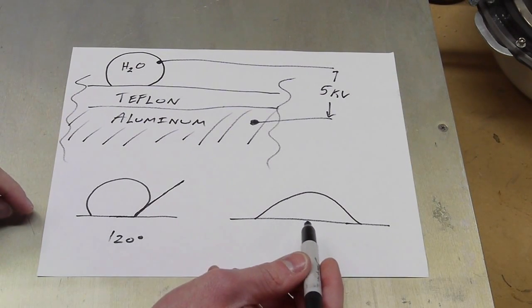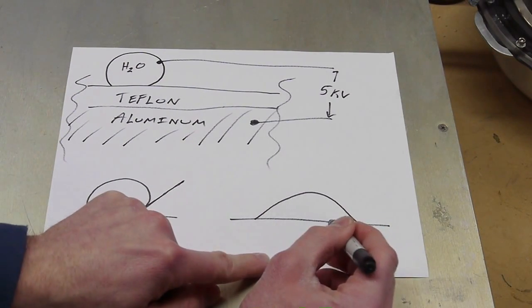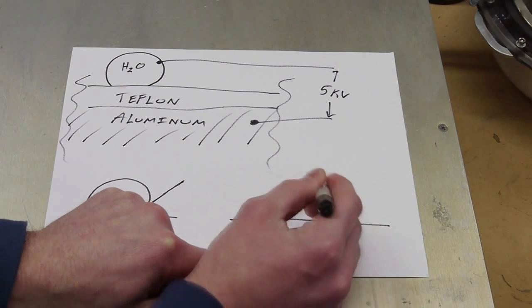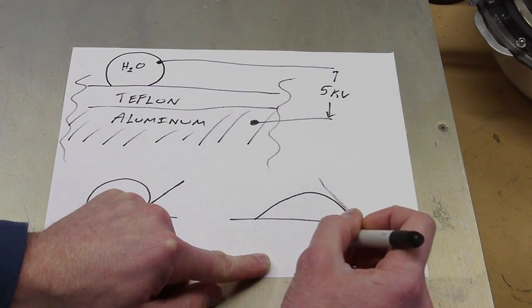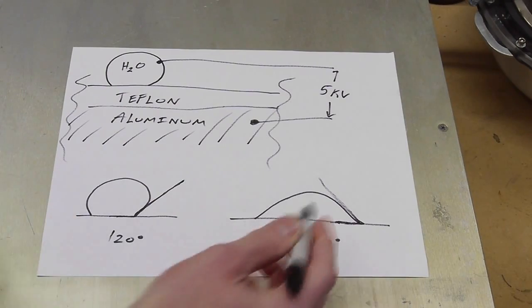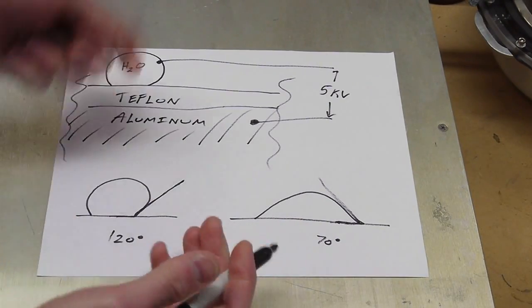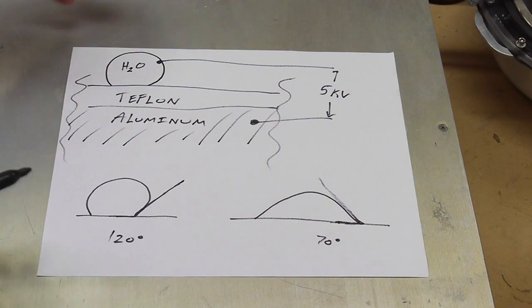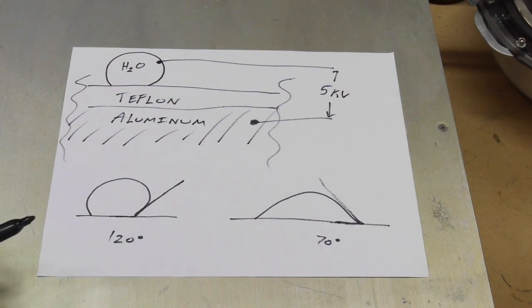And eventually the water droplet will take on this shape. So here the contact angle is, let's say, 70 degrees, whatever that is. And it changes the shape of the whole droplet because those water molecules are basically being pushed down, attracted downward toward the aluminum.